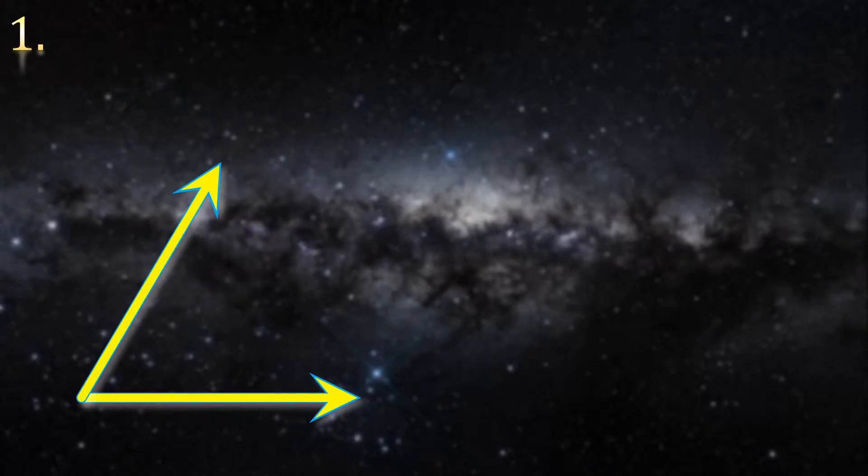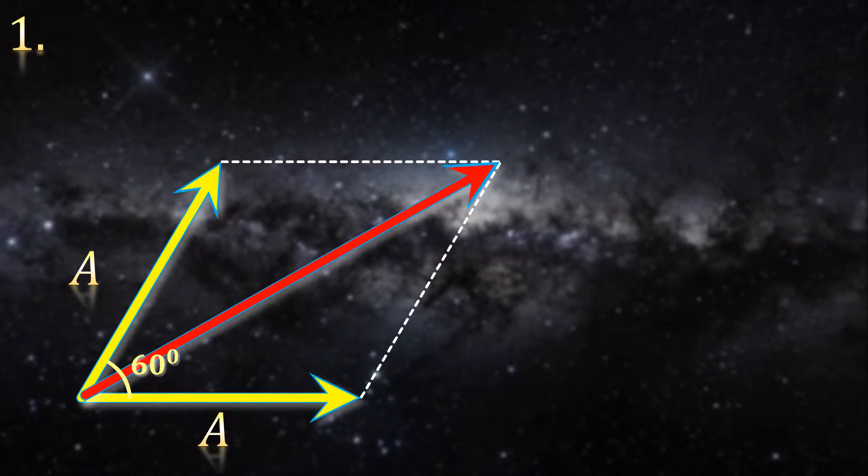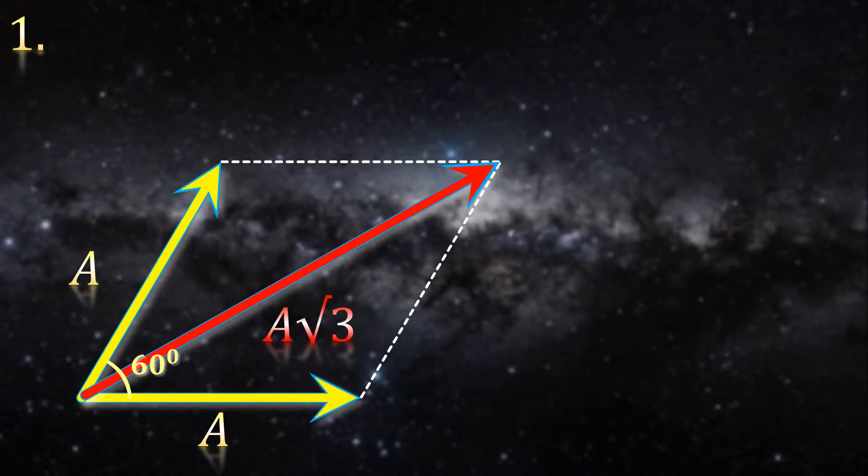First one, if you have two vectors of magnitude a making 60 degrees with each other, then the resultant of the two will have a magnitude of a root 3 and obviously it will be right between the two.